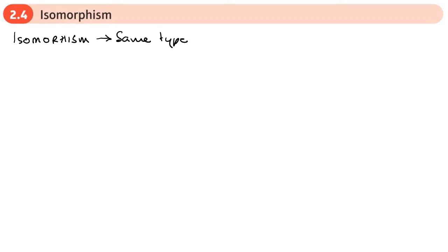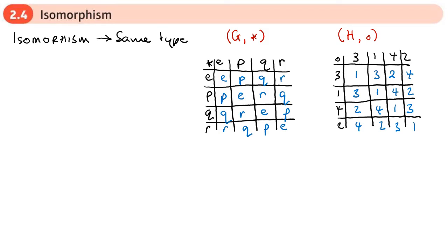We'll start by looking at the Cayley tables of these two groups. One will be a group called G, with star representing its binary operation, and the second group will be H, with a dot-circle representing its binary operation. Group G has elements E, P, Q, R, and group H has elements 3, 1, 4, 2.